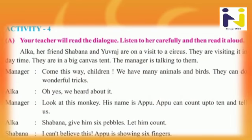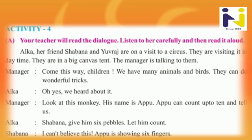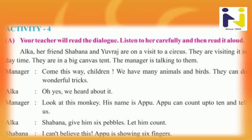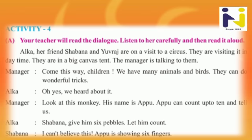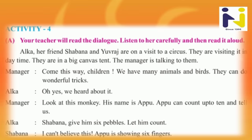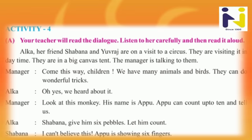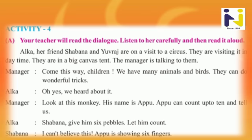Activity for A: your teacher will read the dialogue, listen to her carefully and then read it aloud. Alka, her friend Shabana, and Yuraj are on a visit to a circus.